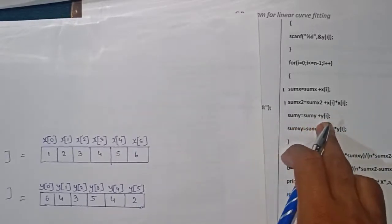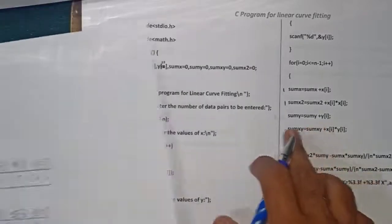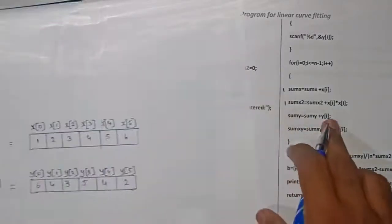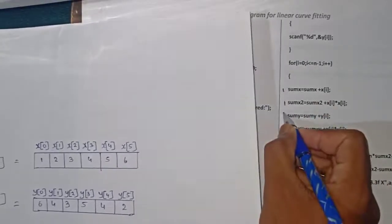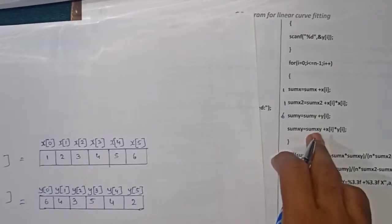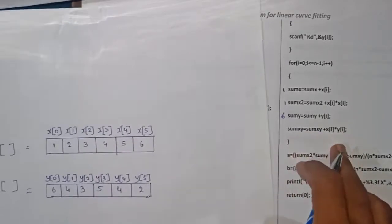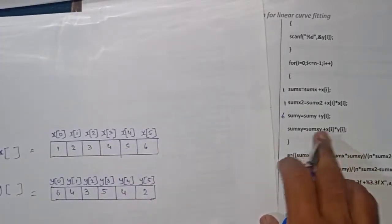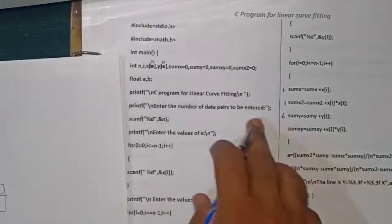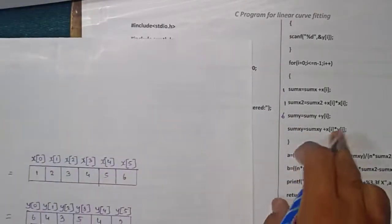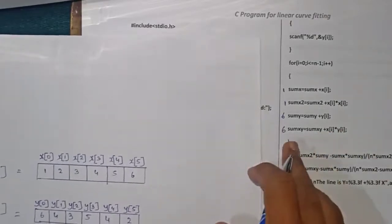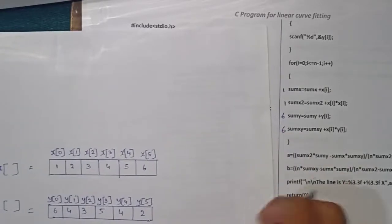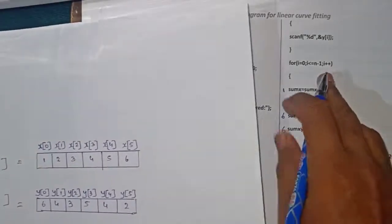sumY equals sumY plus y[0]. y[0] is 6 and sumY was initialized to 0, so 6 plus 0 equals 6 — so for the first iteration sumY will be 6. Then sumXY equals sumXY plus x[0] times y[0]. x[0] is 1 and y[0] is 6, so 1 times 6 is 6, and sumXY was initialized to 0, so sumXY becomes 6 for the first iteration.